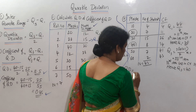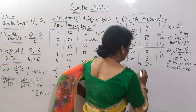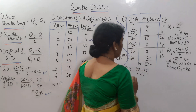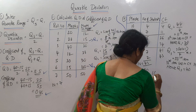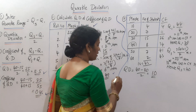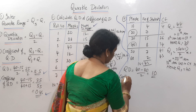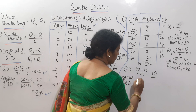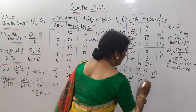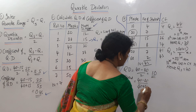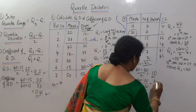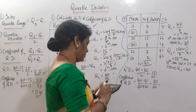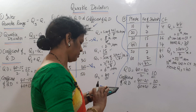Quartile Deviation = (Q3 - Q1)/2 = (40 - 20)/2 = 20/2 = 10. So the Quartile Deviation is 10. Coefficient of Quartile Deviation = (Q3 - Q1)/(Q3 + Q1) = 20/60 = 0.33.